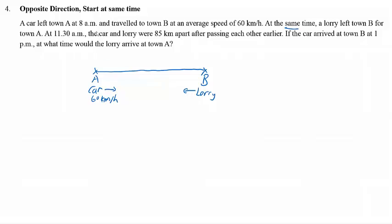At 11:30 AM, the car and lorry were 85 km apart after passing each other earlier. That means there is a condition — the car and lorry passed each other earlier. After the car and lorry meet each other, the car continues moving and the lorry continues moving. At 11:30 AM, the car will be somewhere here and the lorry is here, and the distance between them is 85 km apart.